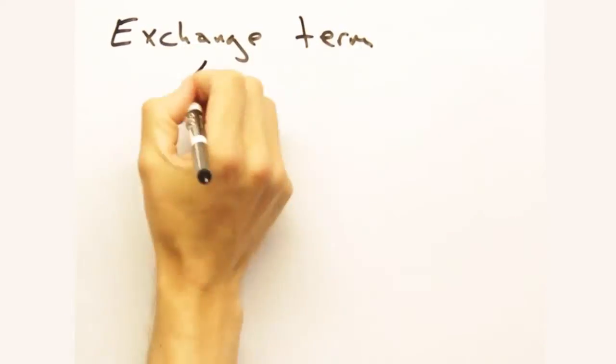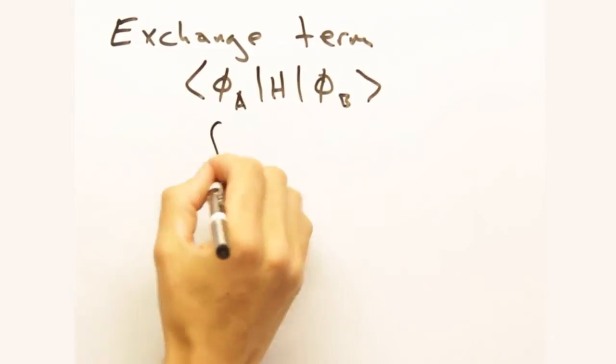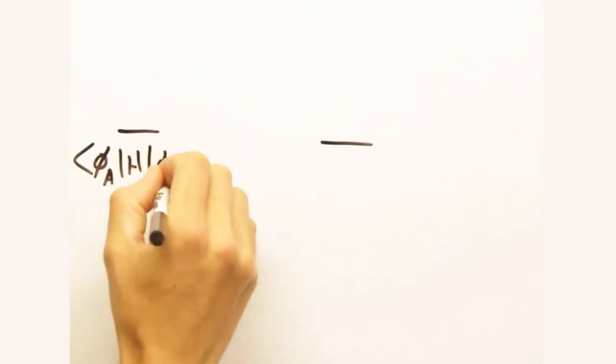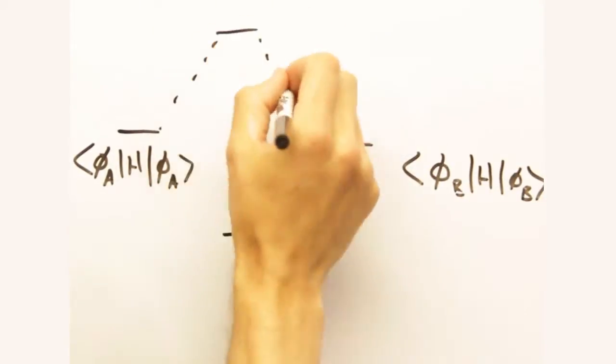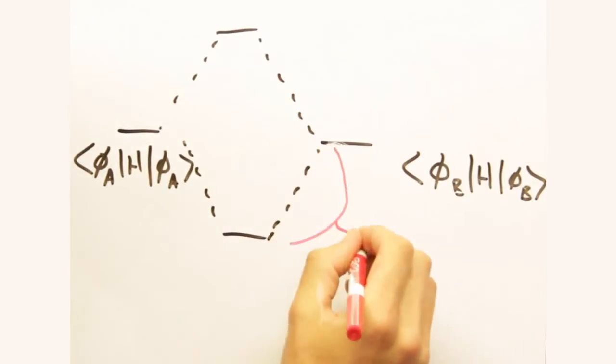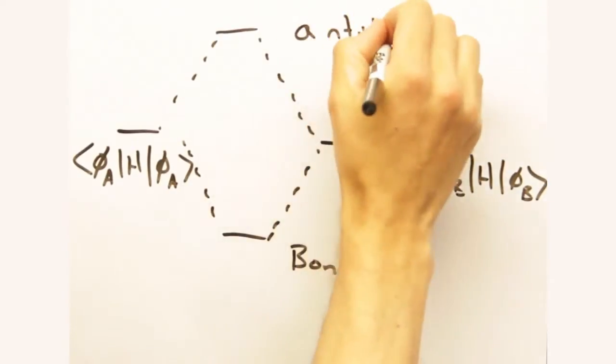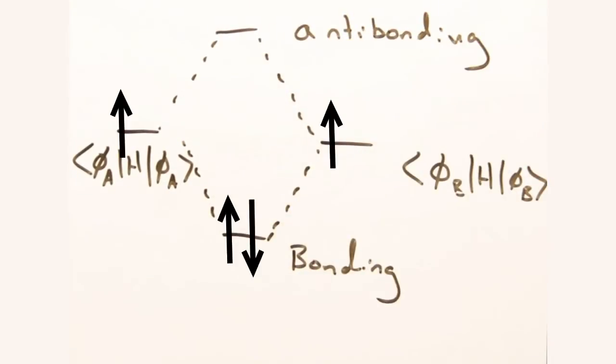This exchange term is pretty critical. It describes the interaction of the two atomic wave functions via the system's Hamiltonian. The exchange term also leads to an energy splitting, where we have two energy levels. So we can see that the exchange term is driving the formation of bonds. If the energy is greater than the non-bonded case, we'd call that the anti-bonding state. You got it.